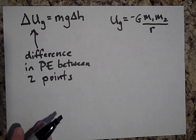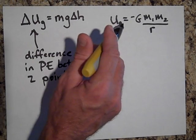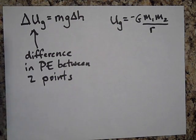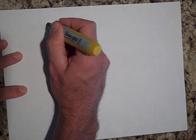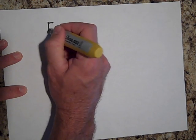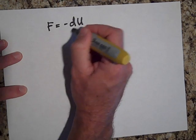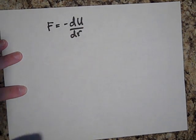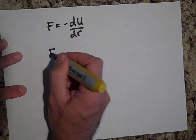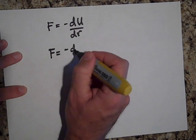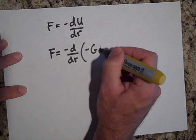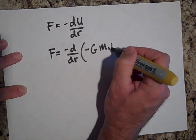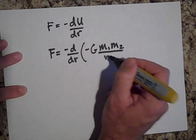I'd like to show you that if we take the negative derivative of this potential energy with respect to R, we do get force. I'm going to derive that for you later, but let me just show you that if I take the negative derivative that the force is equal to the negative derivative of U with respect to R. So the force is equal to the negative derivative with respect to R. Now I'm going to write the function for U. It's negative G M1 M2 all over R.